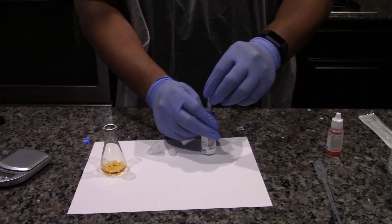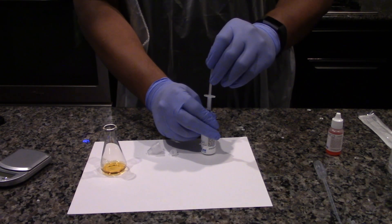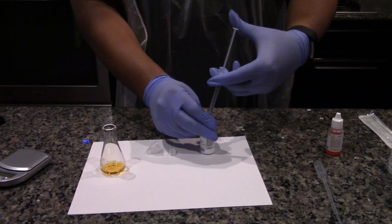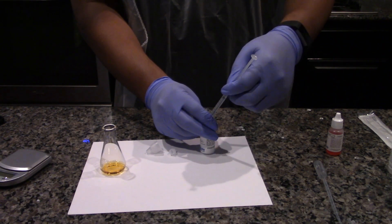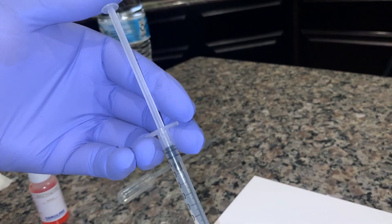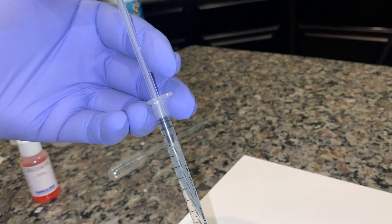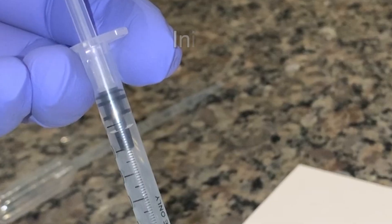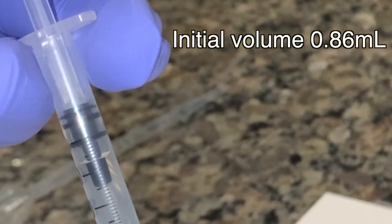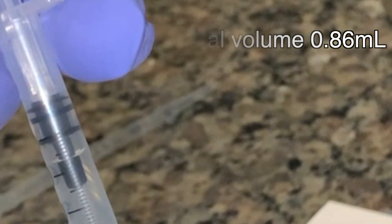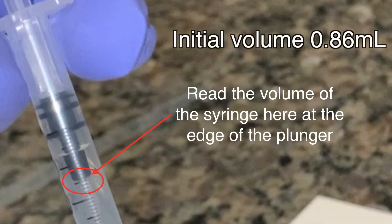Fill the syringe with hydrochloric acid by drawing the plunger back. Try to minimize the amount of air in the syringe. Record the initial volume of hydrochloric acid solution in the syringe to the nearest 0.01 milliliters. Read the volume of the syringe at the edge of the plunger.